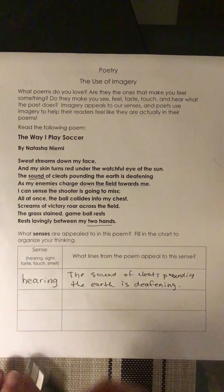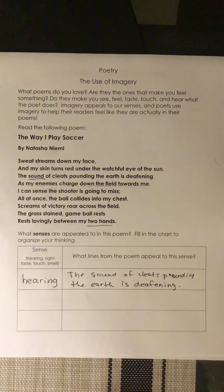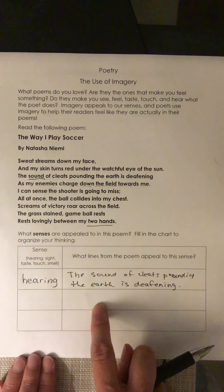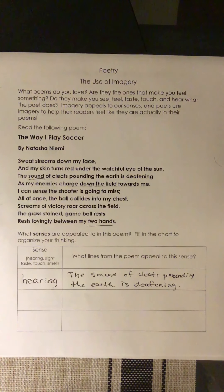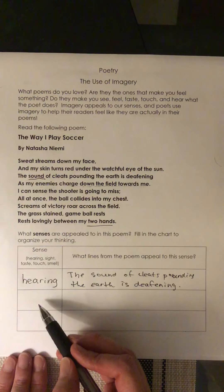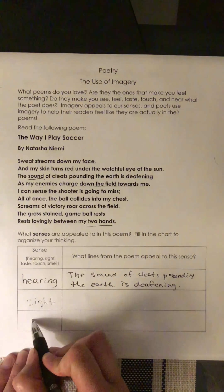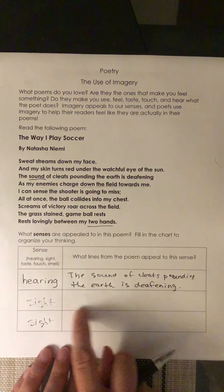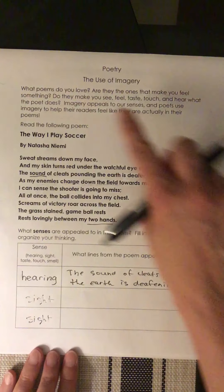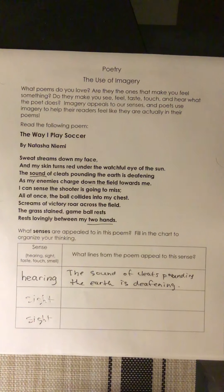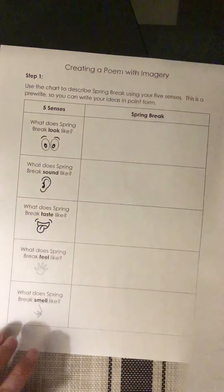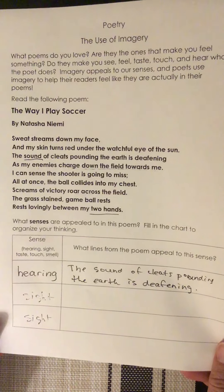Now pause the video. I want you to find two more senses being appealed to in this poem, and write the line from the poem that goes with each sense. So pause the video now. Welcome back. You should have written two more senses — maybe sense of sight, or another. Then write the line from the poem that goes with that sense. The purpose of this sheet was just to get you reading a poem; you can put it aside.